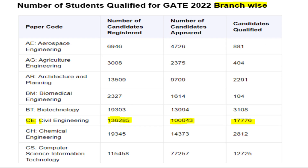Looking at branch-wise data for 2022, in Civil Engineering approximately 1 lakh 36,000 students applied and 1 lakh appeared. The number of candidates who qualified was 17,766, which is approximately 17% to 18%.